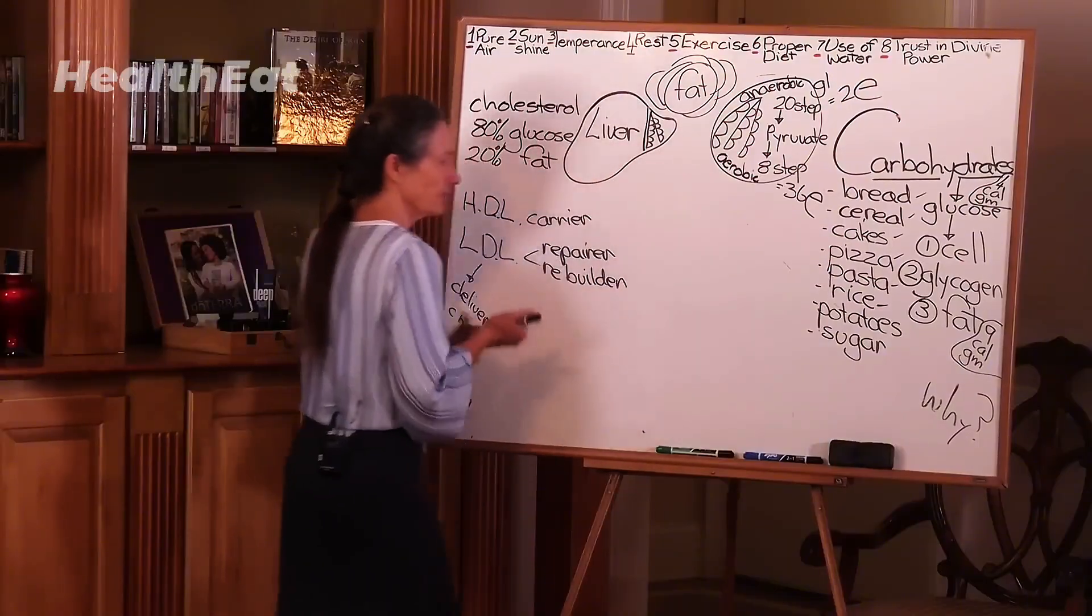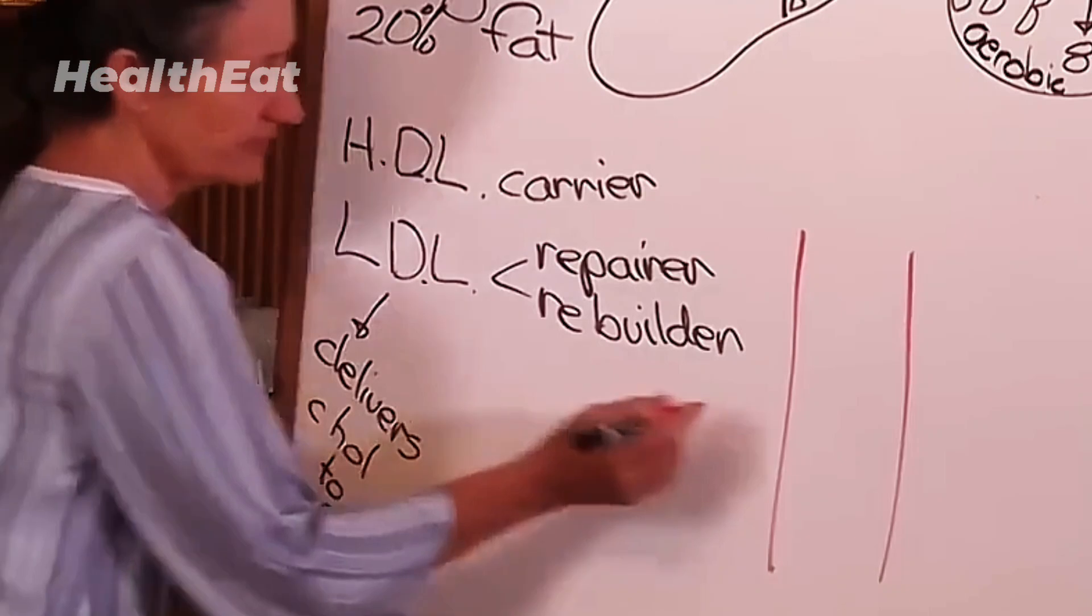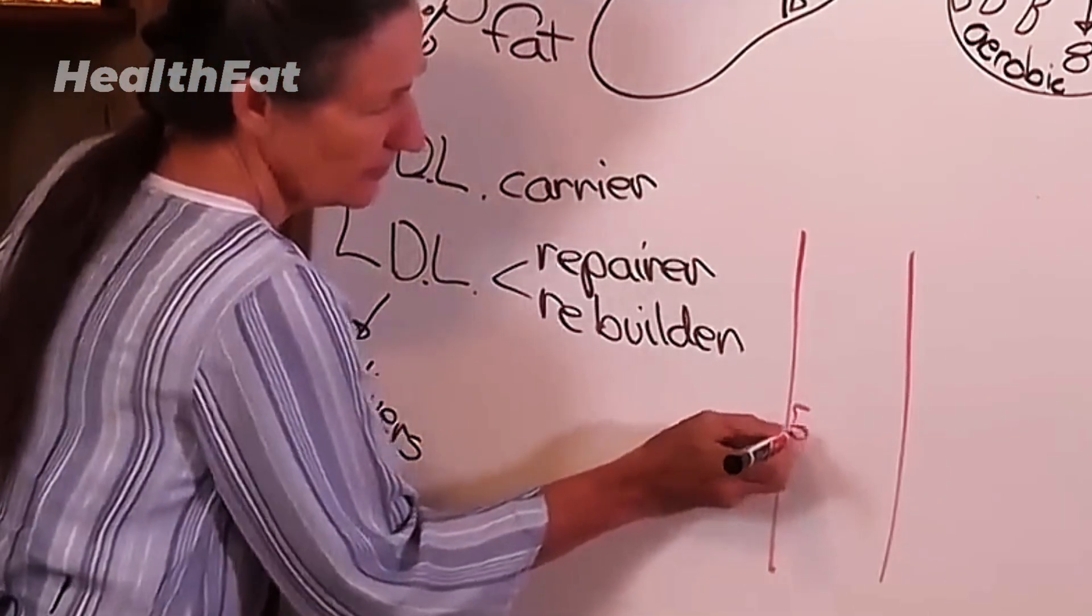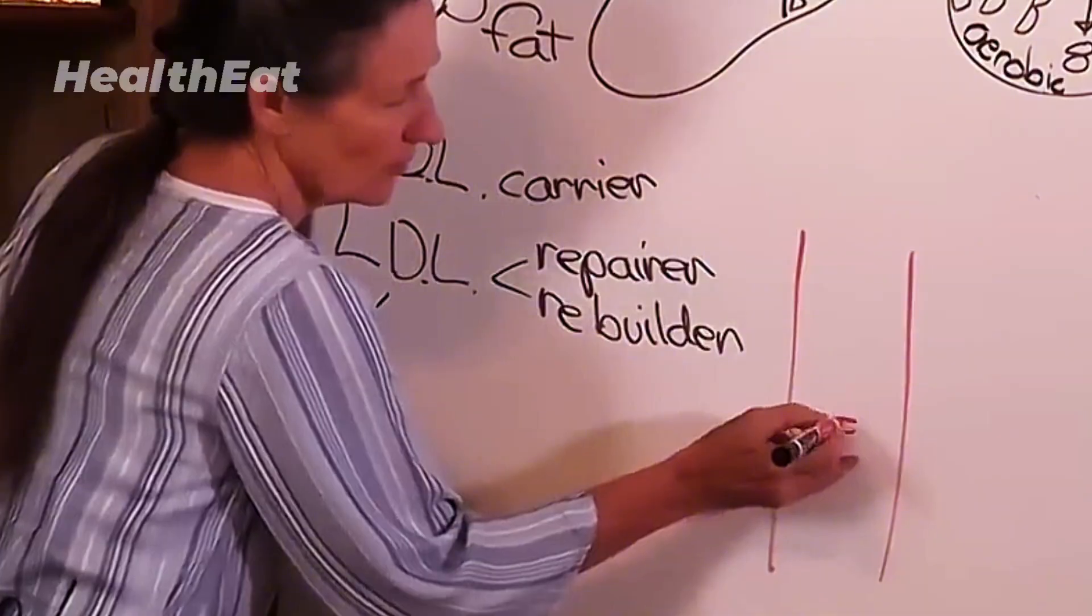Let's have a look at the blood vessel and how the cholesterol works in the blood vessel. Because of its low density, LDL is always on the edge. Because of its high density, HDL is always in the middle.